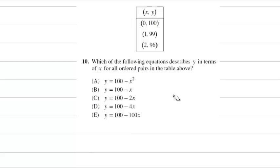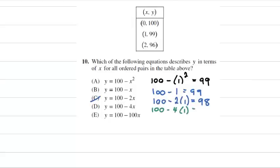100 minus 1 squared should give us 99, and it does. 100 minus 1 gives us 99. 100 minus 2 times 1 doesn't give us 99, it gives us 98. So we know that C does not work. 100 minus 4 times 1 gives us 96, so D doesn't work. And for choice E, we have 100 minus 100 times 99, which I don't even need to test out. I know that's not going to come out to 99. So E is not one of the choices.